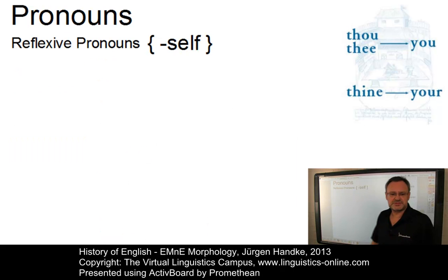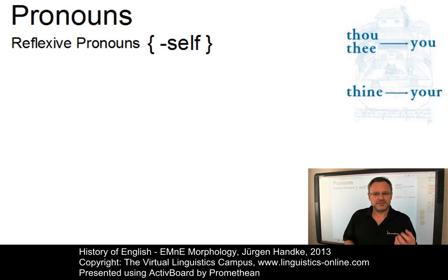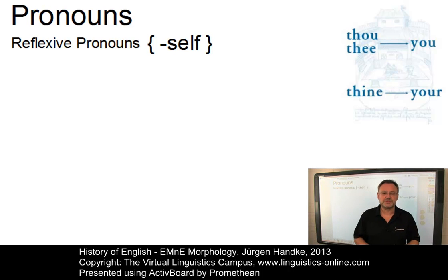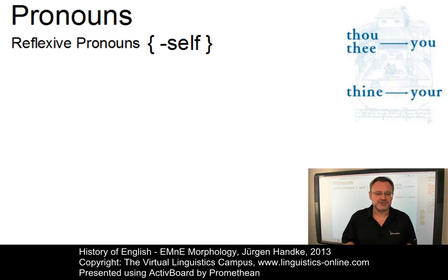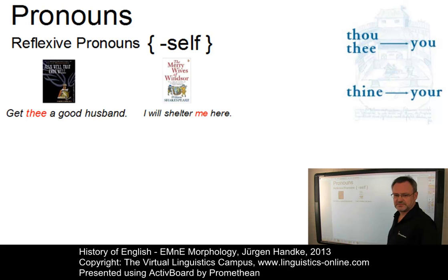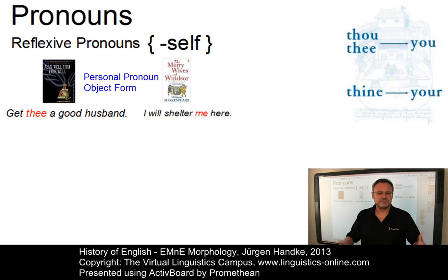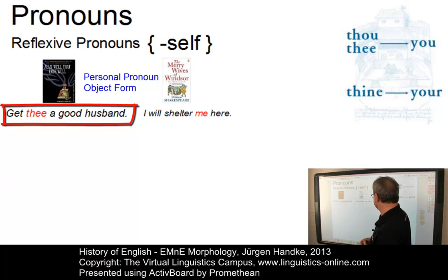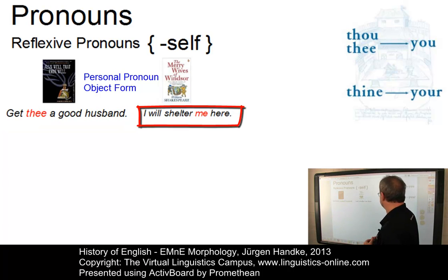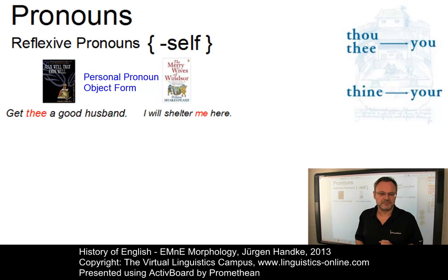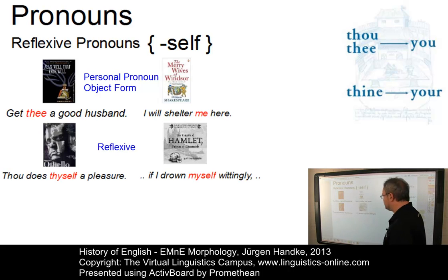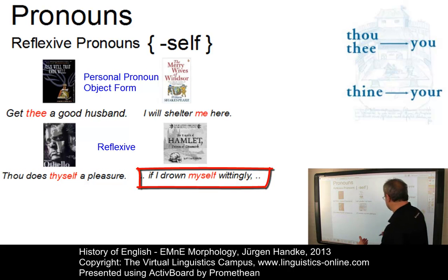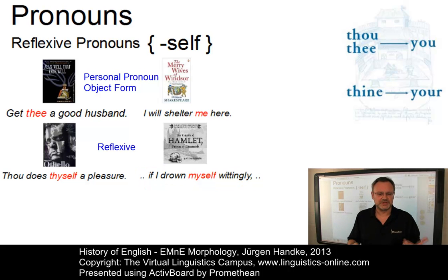The use of reflexive pronouns — that is, forms that involve the item self — began in Middle English and became more frequent in early modern English, but the older practice of using the simple object form of a pronoun also continued. So there were two parallel options as shown in Shakespeare's dramas: the simple personal pronoun object form, e.g., get thee a good husband and a will shelter me here, or a true reflexive pronoun such as thou does thyself a pleasure and if I drown myself wittingly.